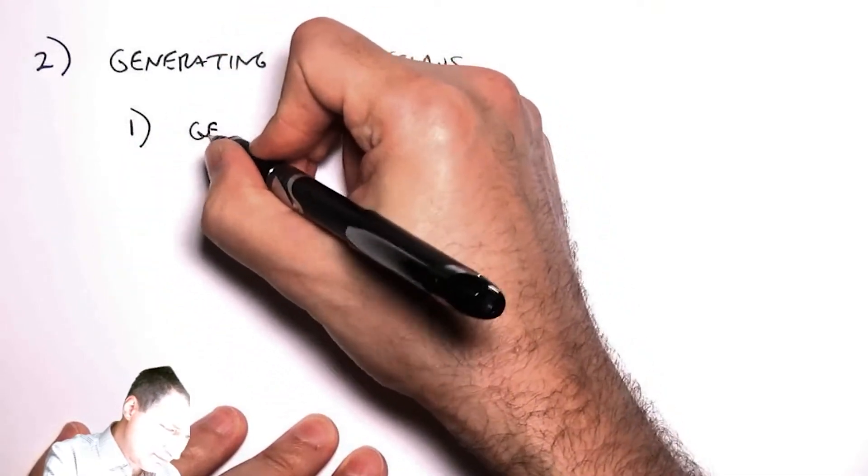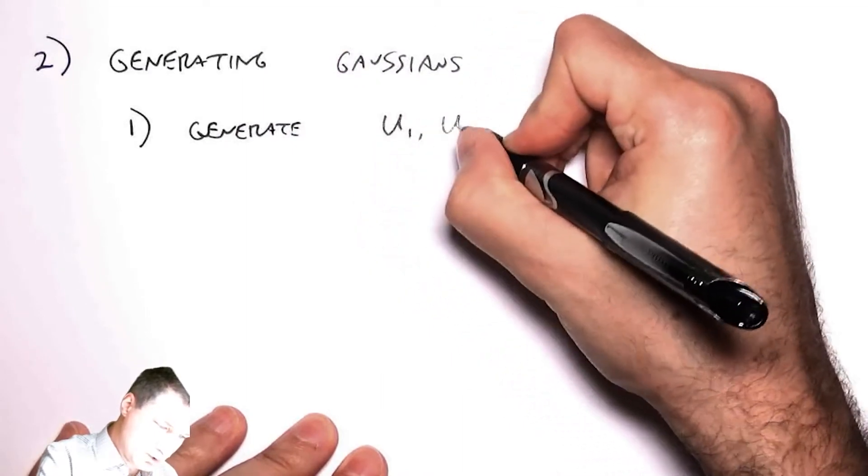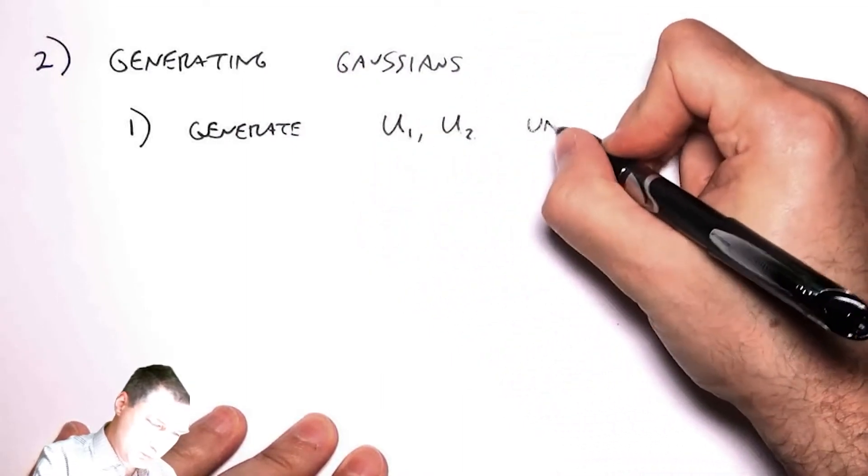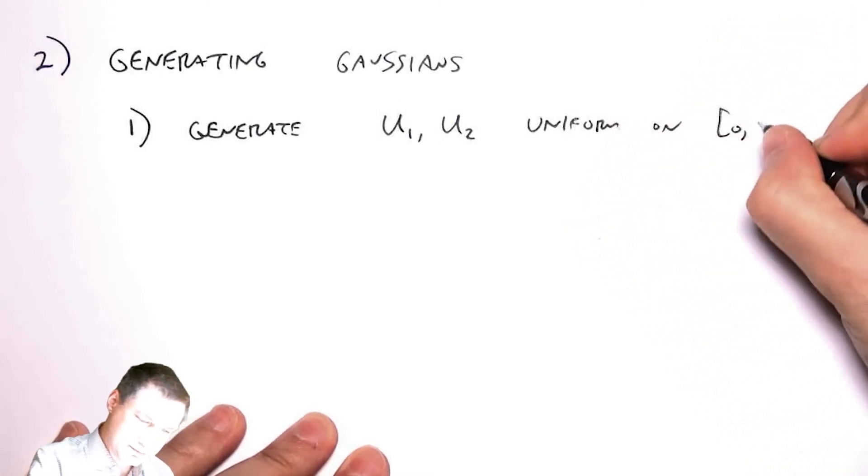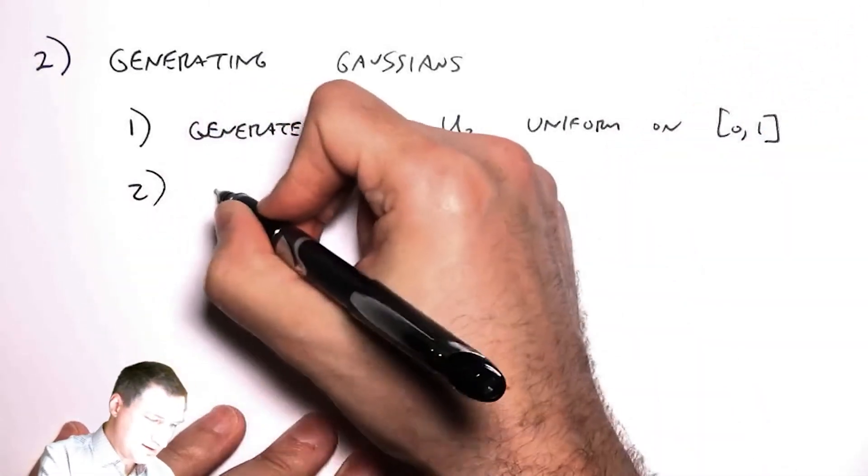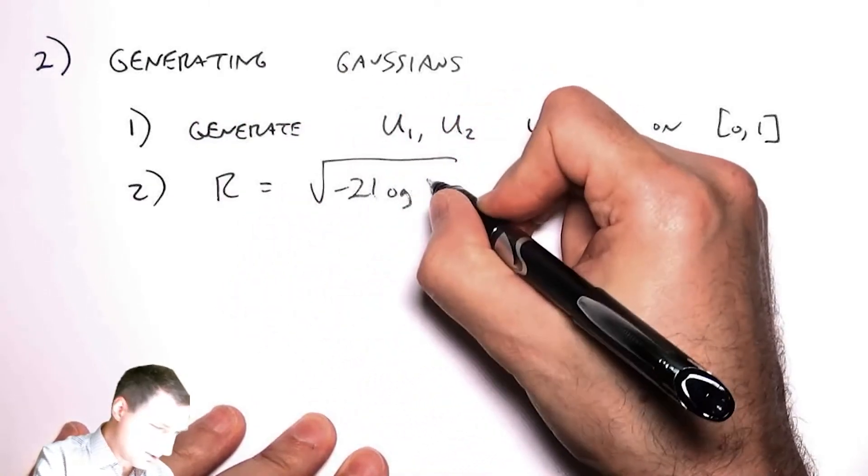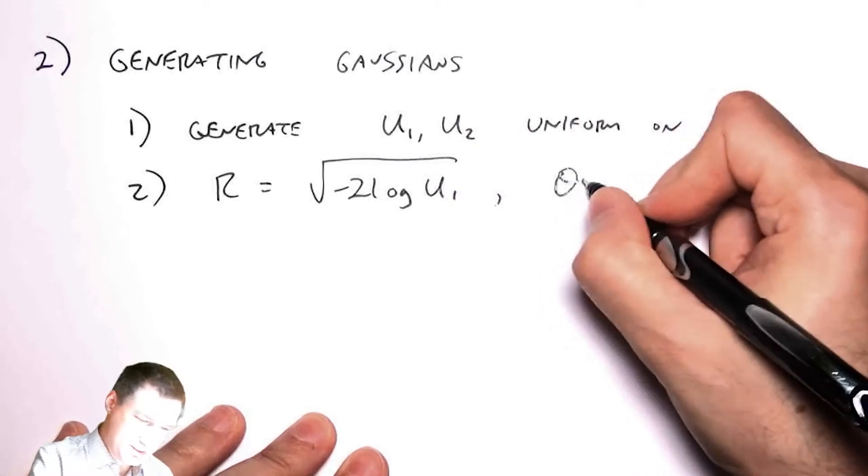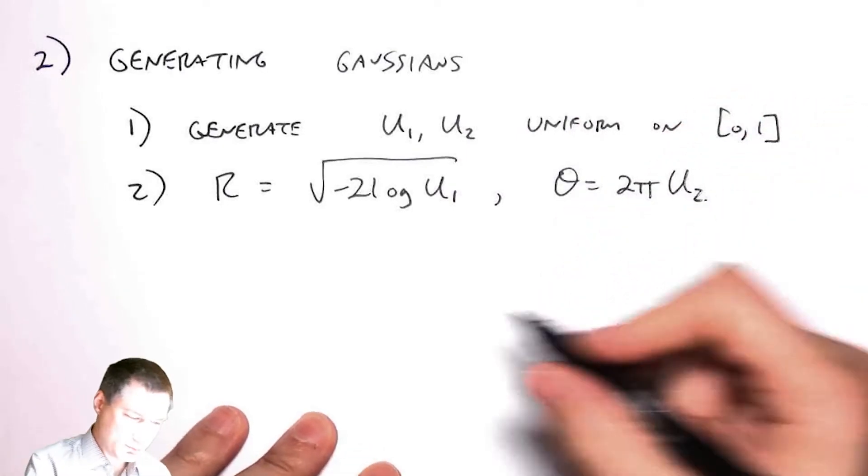First, I generate U1 and U2, which are independent uniform random variables on 01. Then I let r equals minus 2 times the log of the first one and theta equals 2 pi times the second one.